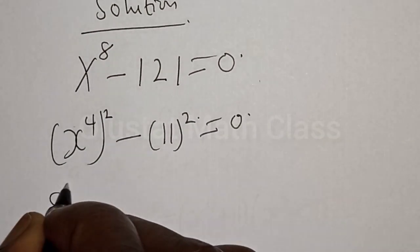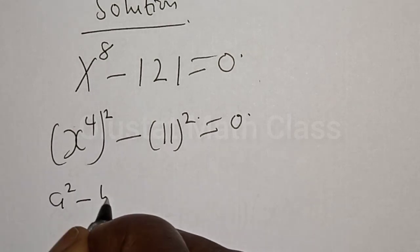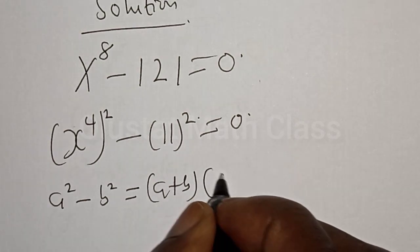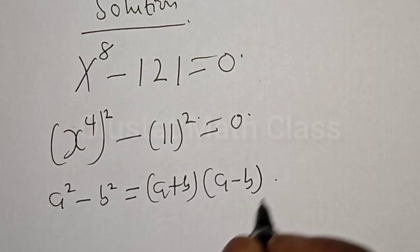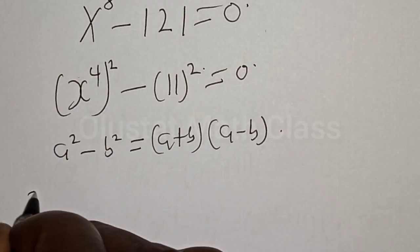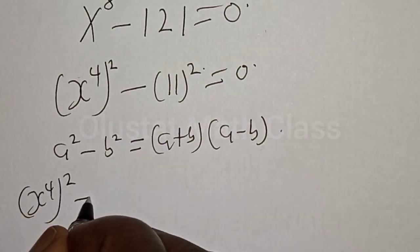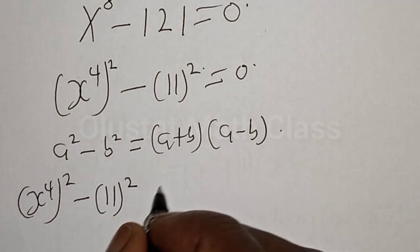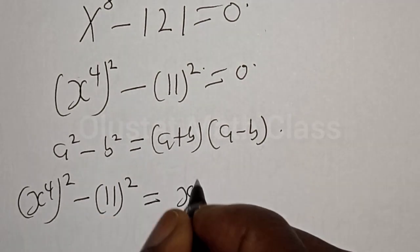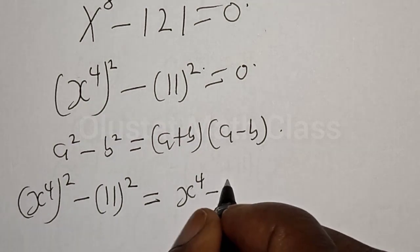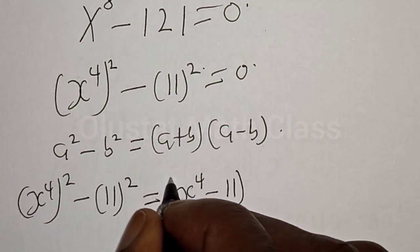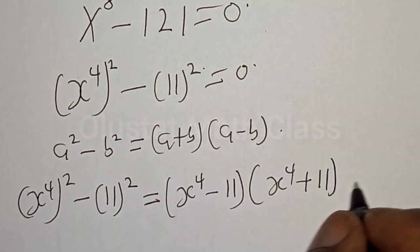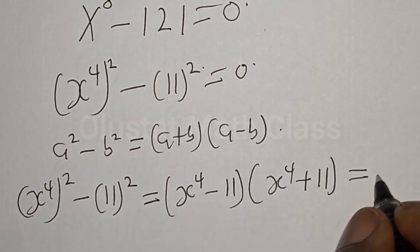Now remember, if you have a squared minus b squared, it is equal to a plus b multiplied by a minus b. Therefore, s raised to power 4 all squared minus 11 all squared is equal to s raised to power 4 minus 11, multiplied by s raised to power 4 plus 11, and everything equals 0.